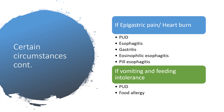Under certain circumstances: if there is epigastric pain or heartburn and now hematemesis, we should be thinking of peptic ulcer disease, esophagitis, gastritis, eosinophilic esophagitis, and pill esophagitis. If the child is vomiting and having food intolerance, we should be thinking about peptic ulcer disease or food allergy.